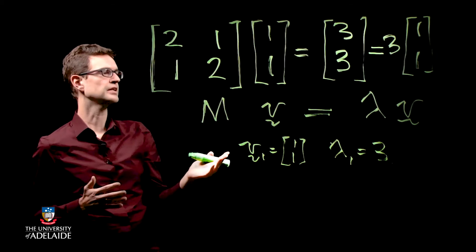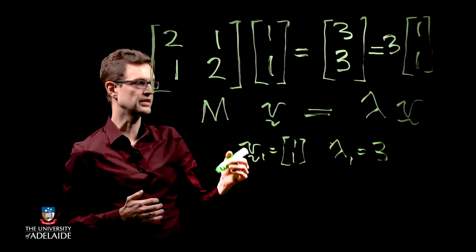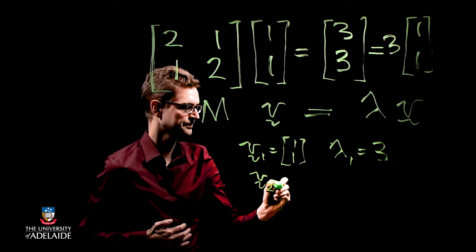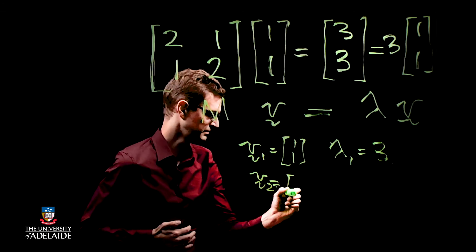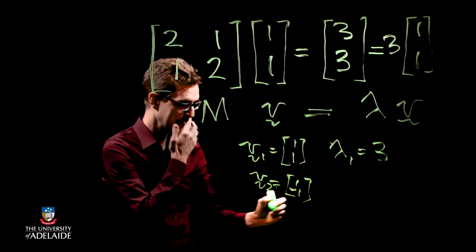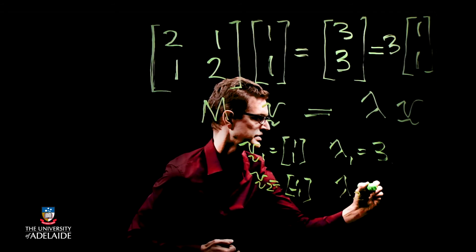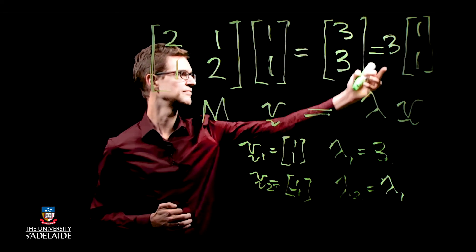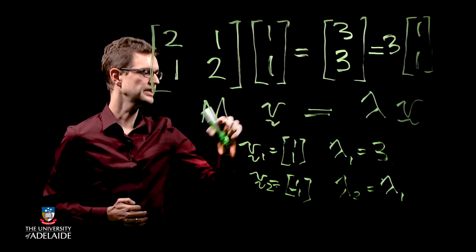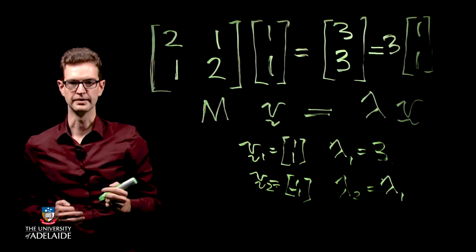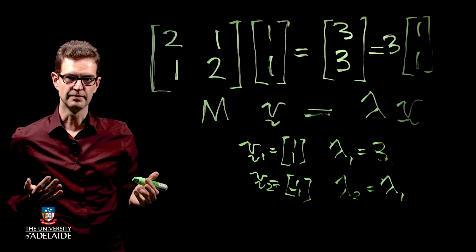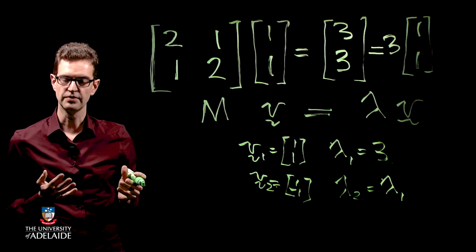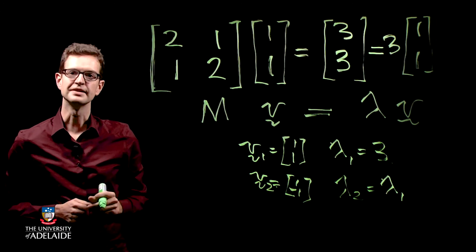It turns out this matrix has another eigenvector and eigenvalue: v2 = [-1, 1] and lambda 2 = 1. If you plug this vector and value into the equation, you should get that relationship holding. That's what eigenvalues and eigenvectors are. The second piece of the puzzle we need is covariance matrices, which Jono will talk about in the next video.